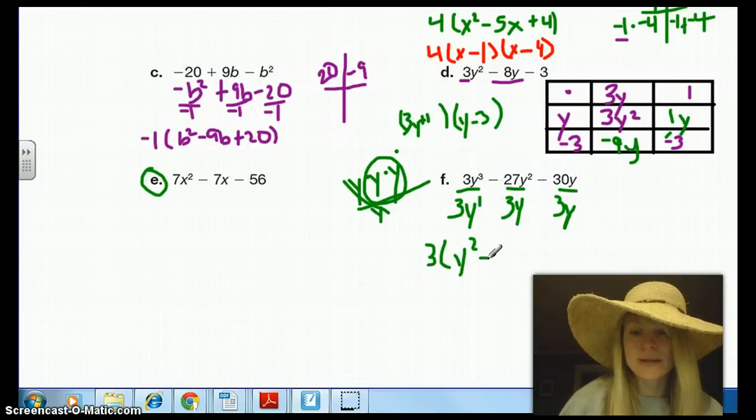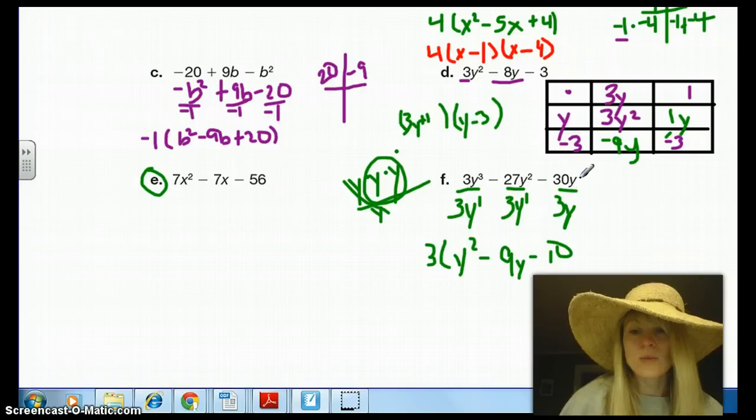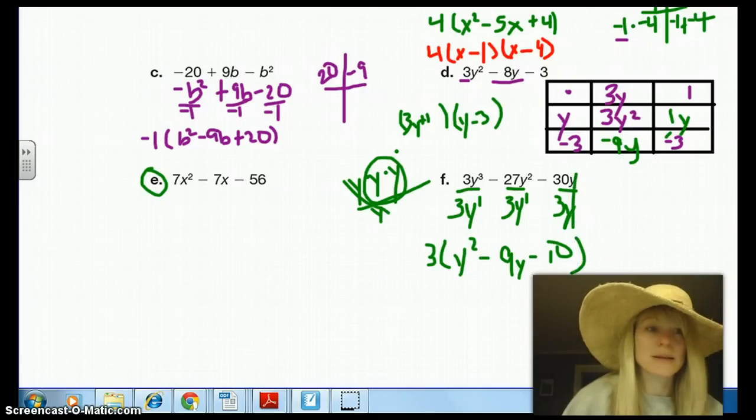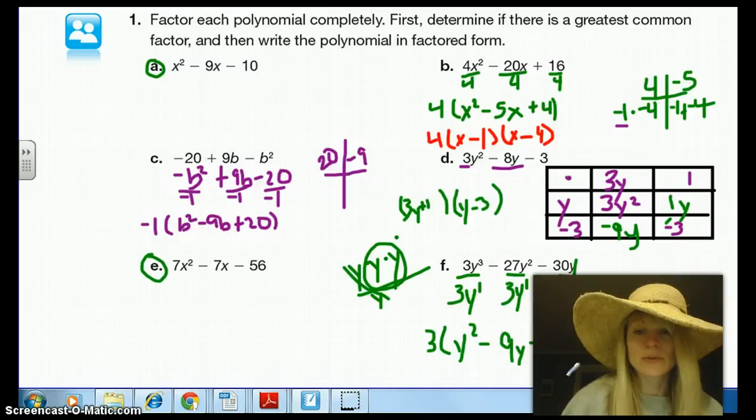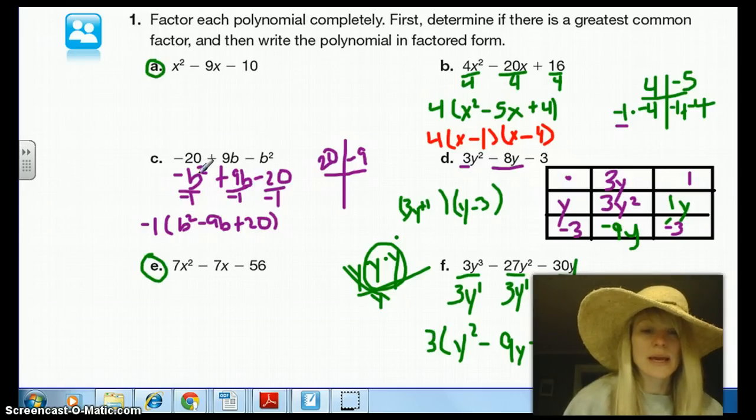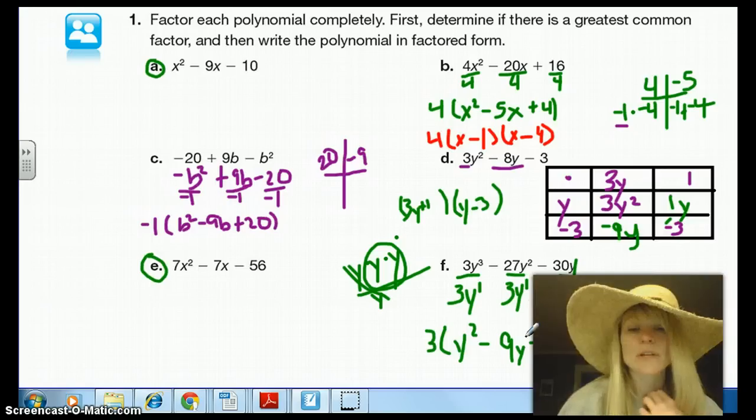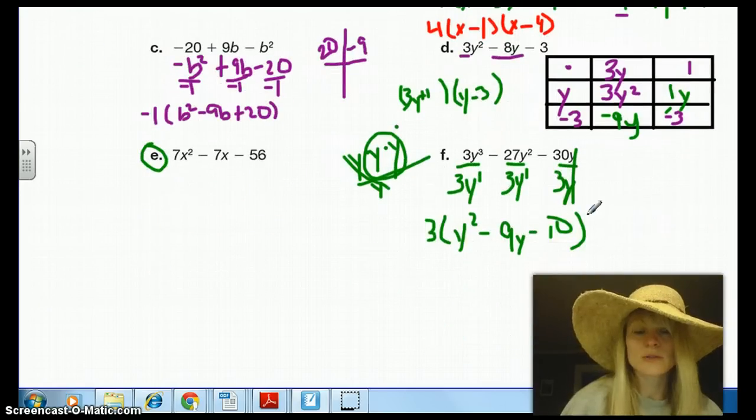So we're going to bring down our minus here. 27 divided by 3 is 9. And then again, y² divided by y¹, subtract 2 minus 1, we'll just get y to the 1 power, or y. And then again, bring down our minus. And then 30 divided by 3 is going to give us 10. And then the y's will cross off here. And then I think this was similar to this first problem. So if you did this first problem, you shouldn't have too much trouble with that problem. So you should have completed A and E, and then finished up F here. You need to factor this into a binomial.